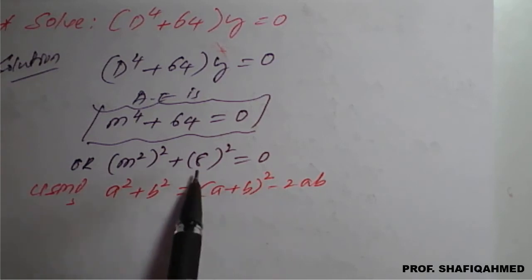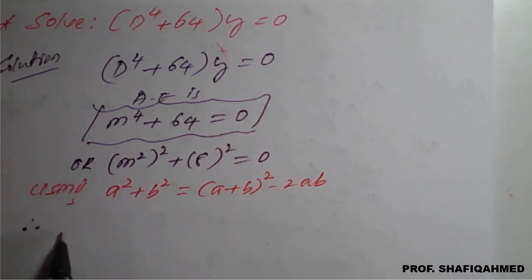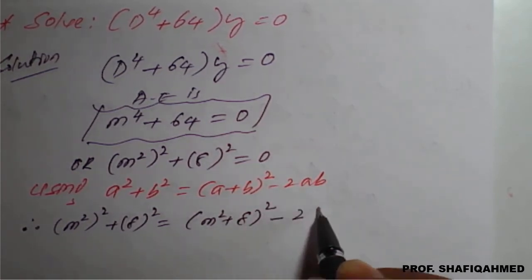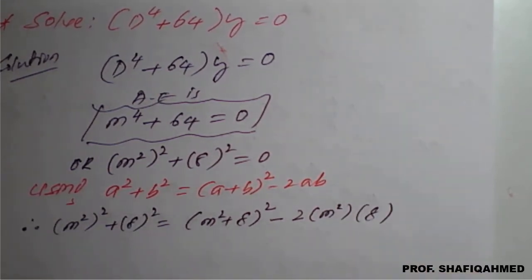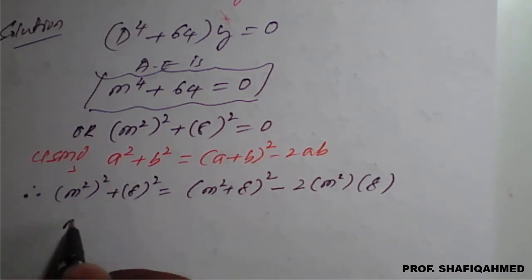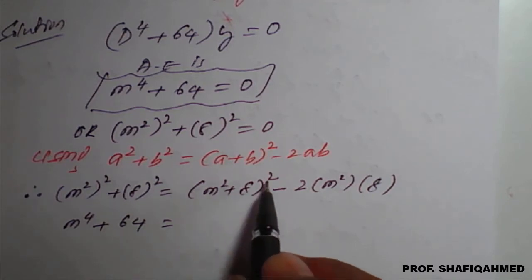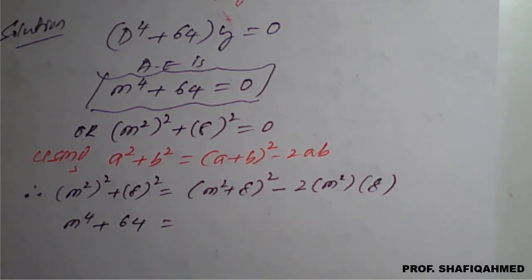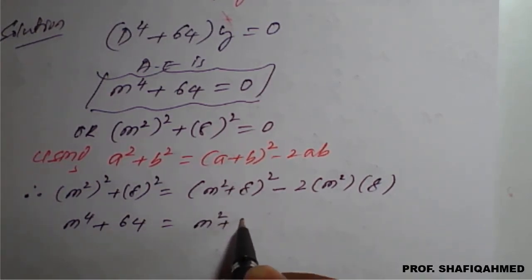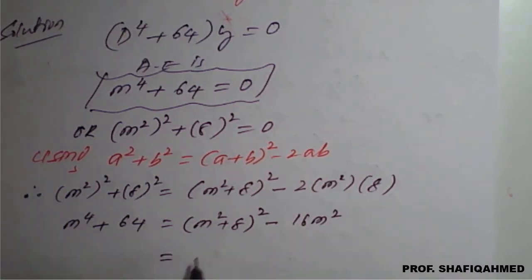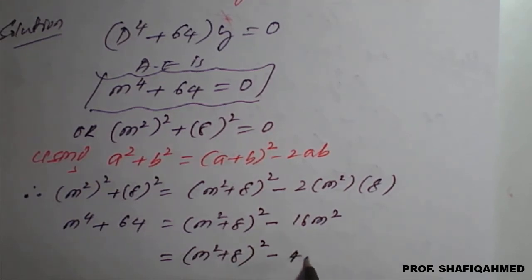Here, the value of a is m square and the value of b is 8. So we will apply this. Therefore, m square whole square plus 8 square will become m square plus 8 whole square minus 2 times m square times 8. So I will write this as m raised to 4 plus 64, which simplifies to m square plus 8 whole square minus 16 m square, which I can rewrite as m square plus 8 whole square minus 4m whole square.